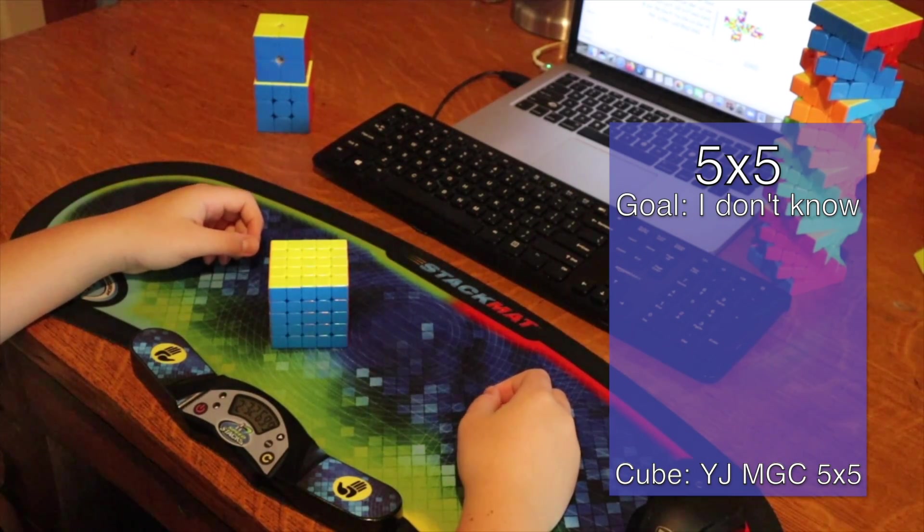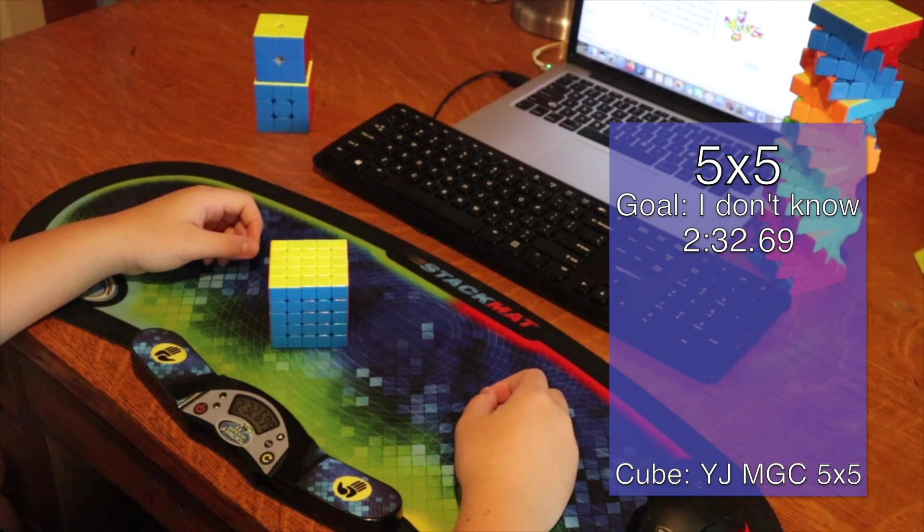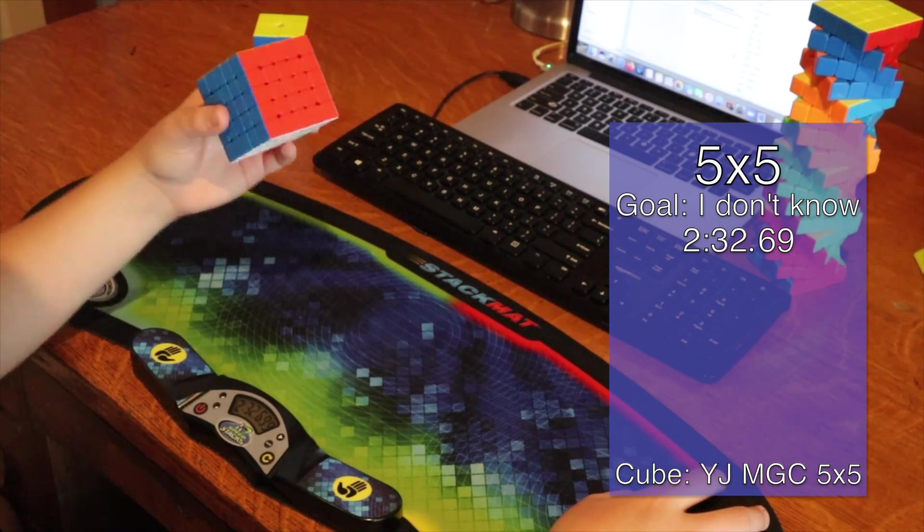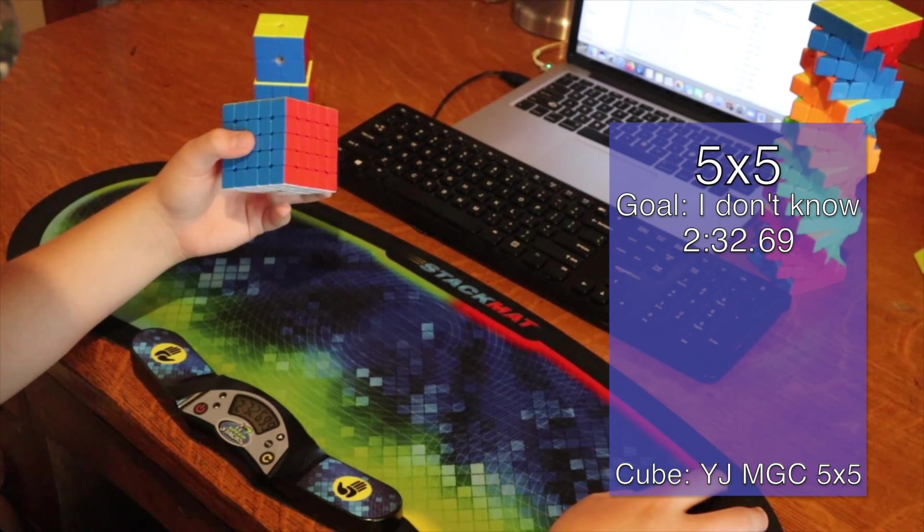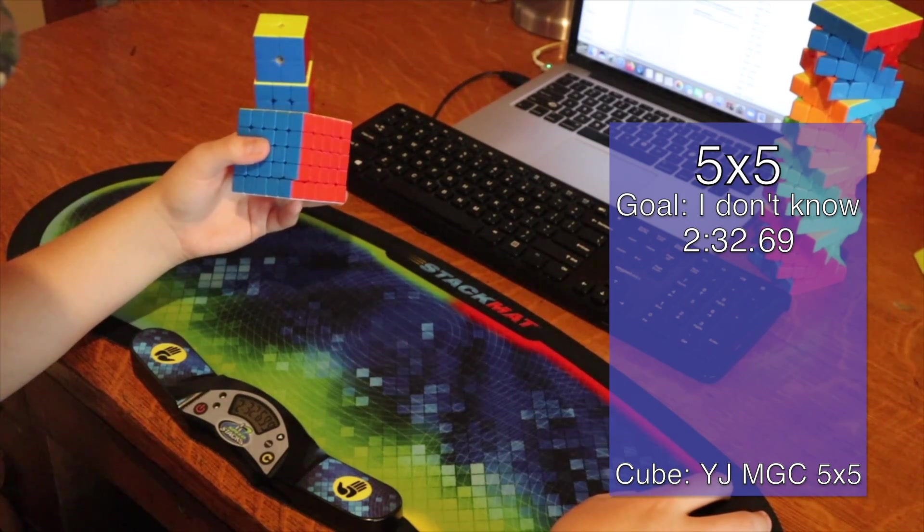Holy moly. 2.32? Well, I guess that's proof that my new MGC is really good because I just beat my 5x5 single.